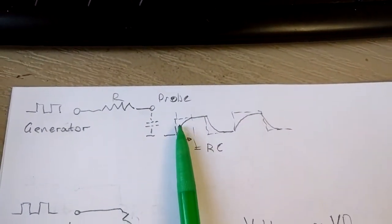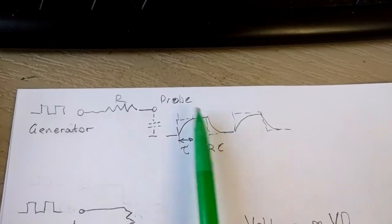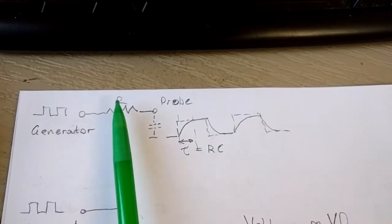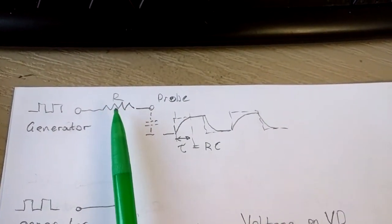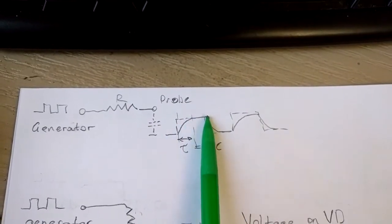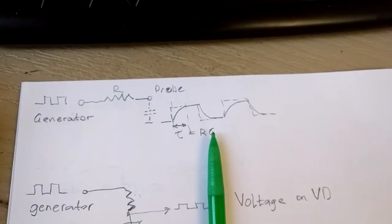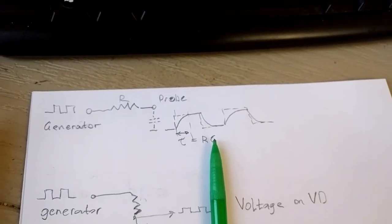So actually, I am observing those types of graphs. For the high value resistance, let's say R equal to 100K, I will see these.